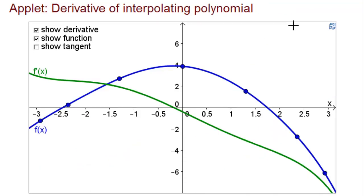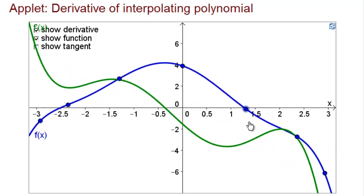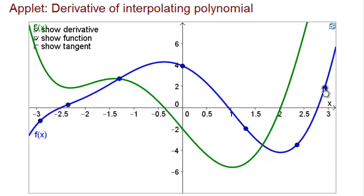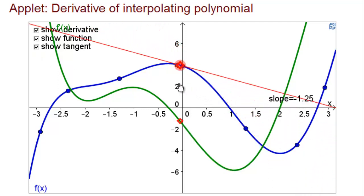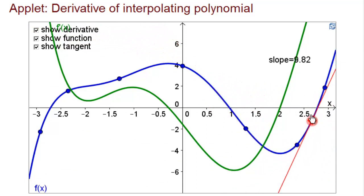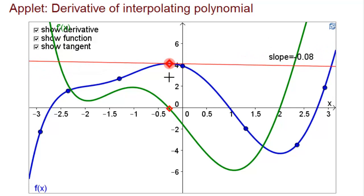Here's another applet you can use to test how well you understand the derivative. In this case, f of x in blue is a polynomial, so its derivative f prime of x in green is also a smooth function. You can drag the blue points up and down to change the function and watch what happens to the derivative. We can also show a tangent line by clicking the box, and drag the red point to see the tangent line at different points along the graph of f. Right here, we can see that the slope is close to 0, about negative 0.8 — and indeed the graph of the derivative is a small negative number right here.